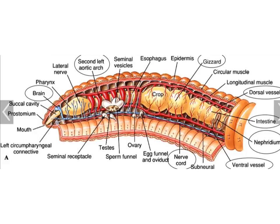Additionally, when we look at a cross-section of the intestines, we see that the dorsal surface of the intestines is folded inward to form a structure known as the typhlosole. This increases the absorptive surface area of the intestines so that more absorption of nutrients can occur.